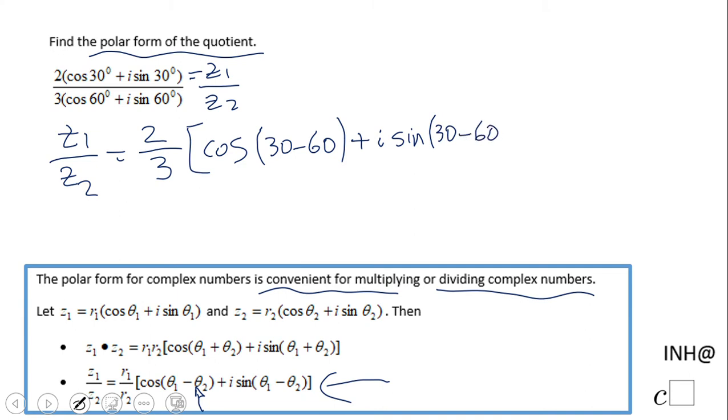So if we do some simplification here, we have two-thirds cosine of negative 30 minus i sine of negative 30, which is a good answer. However, we can do more simplification if you remember.